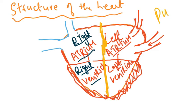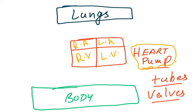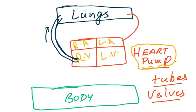The heart acts as a pump and it has to pump blood to different parts of the body. From the right ventricle, blood is carried to the lungs because the right ventricle receives deoxygenated blood. This deoxygenated blood has to be pumped to the lungs where it will be oxygenated, and when oxygenated it is returned to the left atrium, then moves to the left ventricle, and goes out to the entire body.